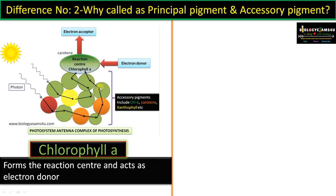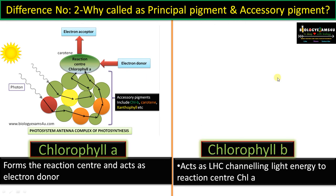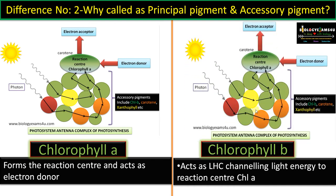Light energy is received by accessory pigments like chlorophyll B, carotin, xanthophyll, etc., and then transferred to chlorophyll A, which is called the reaction center, by a vibratory transfer called resonance transfer. From chlorophyll A, a high-energy electron is released and passed on to different electron acceptors. Chlorophyll B acts as a light-harvesting complex — photons are received by chlorophyll B and all other accessory pigments and channeled to the reaction center chlorophyll A. Recent studies indicate that chlorophyll B has a prominent role in maintaining this light-harvesting complex, called the antennae complex.